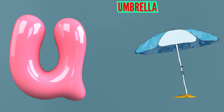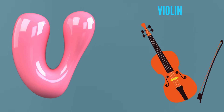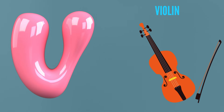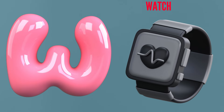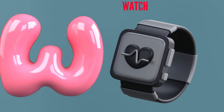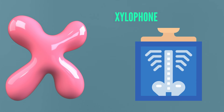U is for Umbrella. U-U-Umbrella. V is for Violin. V-V-Violin. W is for Watch. W-W-Watch. X is for Xylophone. X-X-Xylophone.